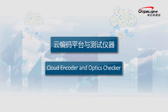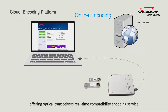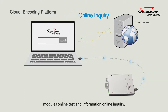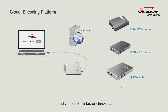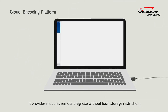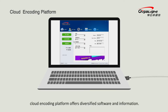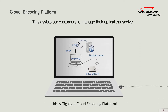GigaLight Cloud Encoder and Optics Checker is a dynamic platform offering optical transceivers, real-time compatibility encoding, service modules, online test and information inquiry. It enables your team to enjoy easy management of switches compatibility, coding, and various form factor checkers. It provides modules with remote diagnostics without local storage restrictions. The customizable cloud encoding platform offers diversified software and information to assist customers in managing their optical transceivers.